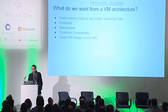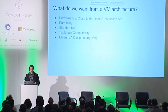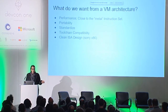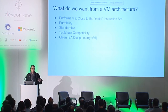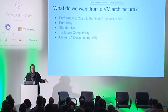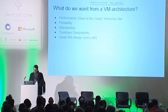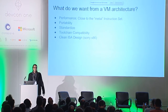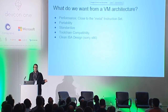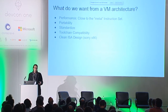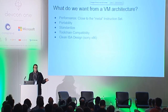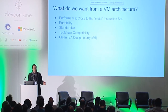What do we want from a virtual machine architecture? We want really good performance and we want it to be close to the metal — we don't want a lot of abstraction between what our virtual machine is doing and what the real hardware is doing. Yet we also want it to be portable, to run on many devices, so we still need a layer between x86 and native assembly. We'd also like it to be standardized, have toolchain compatibility — it would be nice to use LLVM to compile stuff — and lastly, a clean and fairly simple instruction set, or ISA.